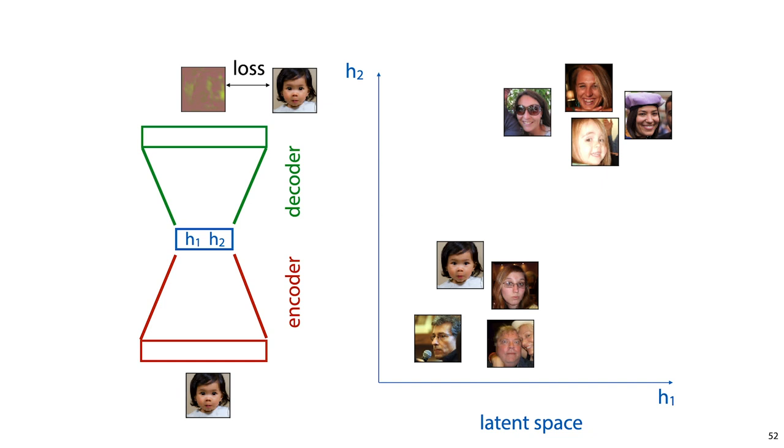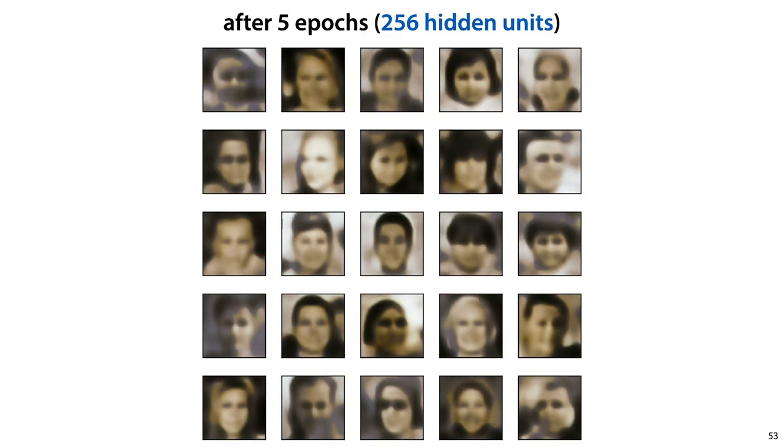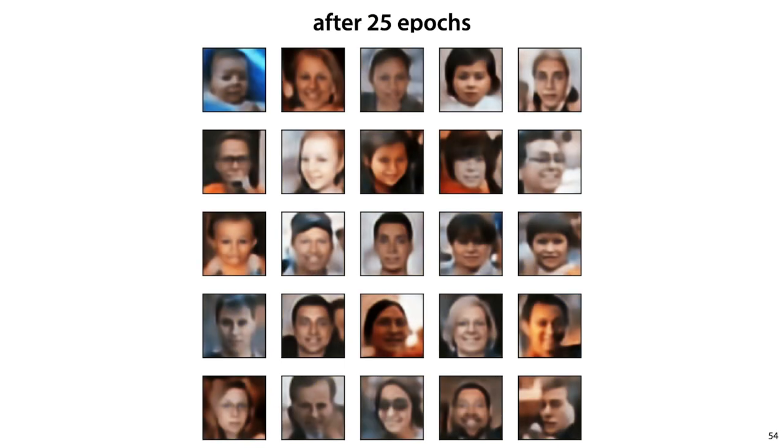To show what this looks like, we trained a small autoencoder with a latent space of 256 hidden units. Here's what the reconstructions look like after 5 epochs. After 25 epochs, we start to see more detail in the faces, and a little bit more color.